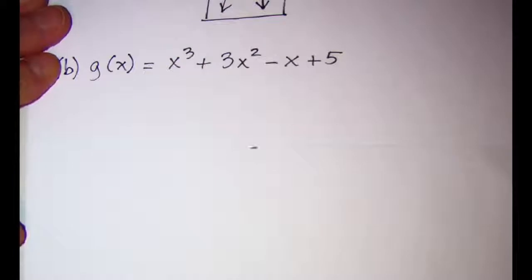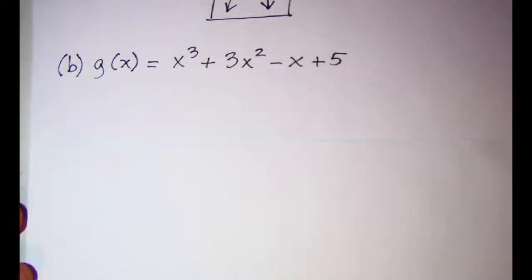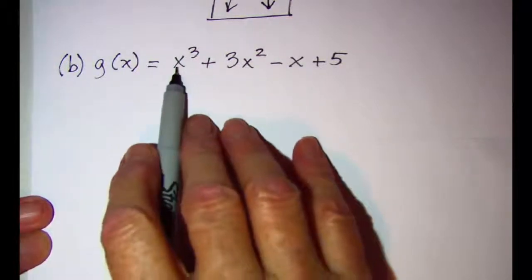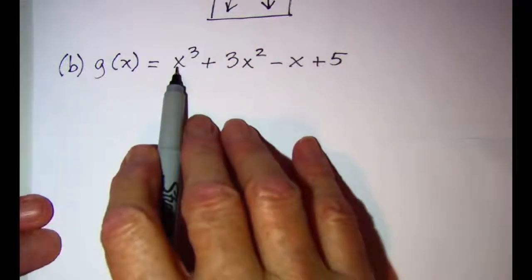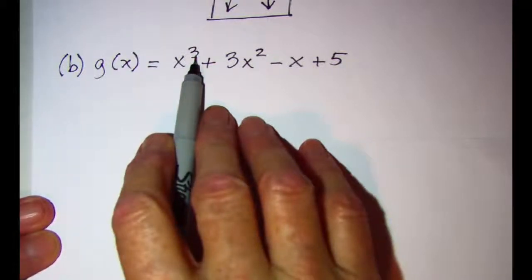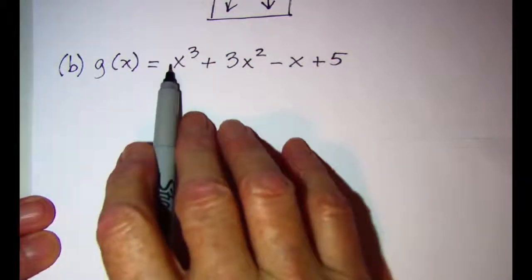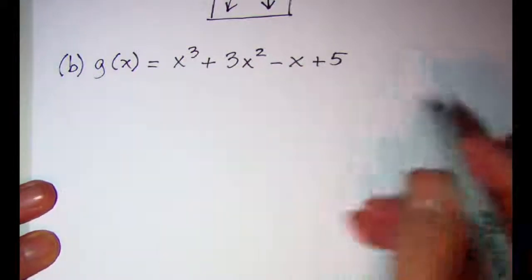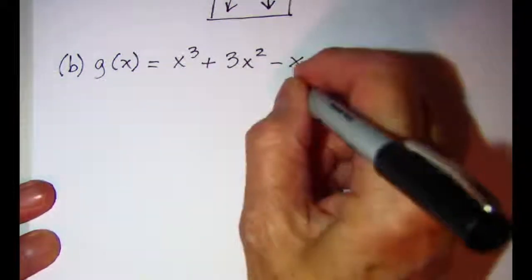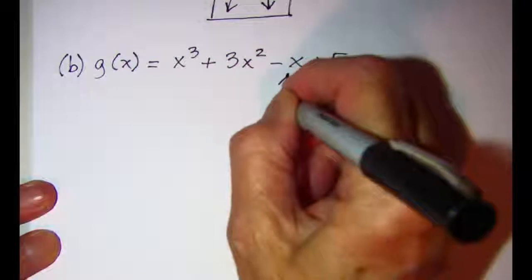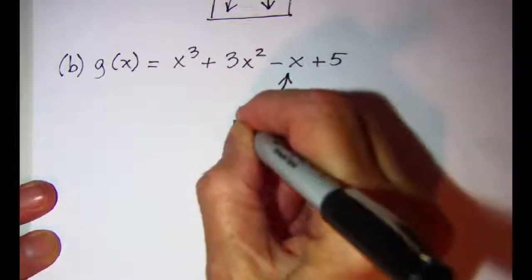In this next example, we have a dominant term of x to the third power. The exponent is odd and the lead coefficient is positive, so our end behavior is going to be right arm up and left arm down.